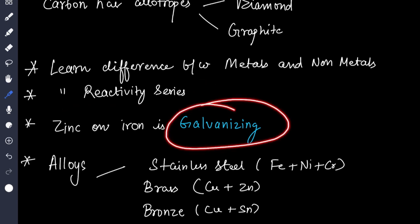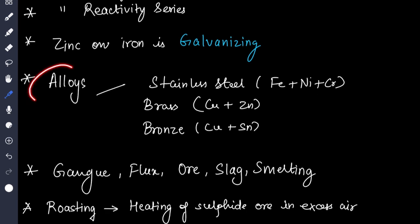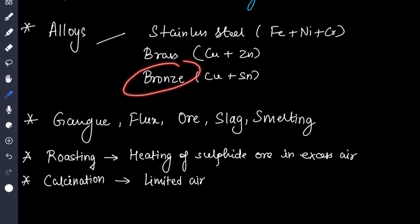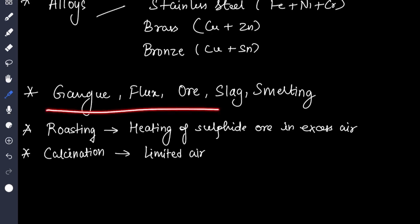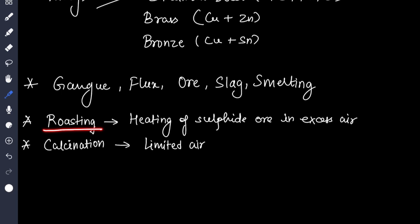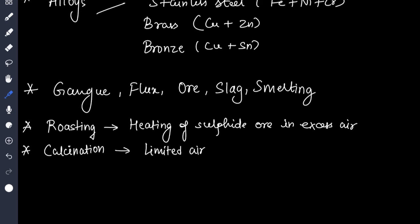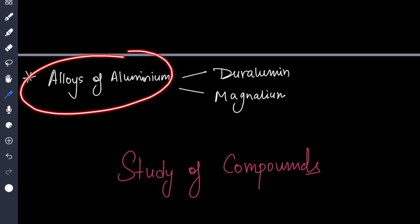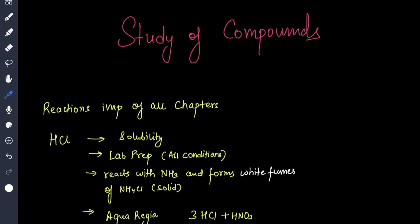What is galvanizing? Alloys like stainless steel, where are they used: Fe + Ni + Cr. For brass it is copper + zinc. For bronze it is copper + tin. All these terms should be crystal clear. Then roasting: heating of sulfide ore in excess air. Calcination is when we heat in limited air. Then alloys of aluminium like duralumin, magnalium.